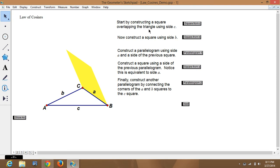Don't worry about this yellow piece at this time. It says, start by constructing a square overlapping the triangle using C. So, C is going to be the side of a square. So, we'll draw that, and it's going to go over top of this triangle, so it overlaps it.